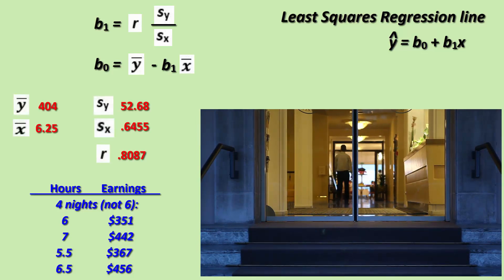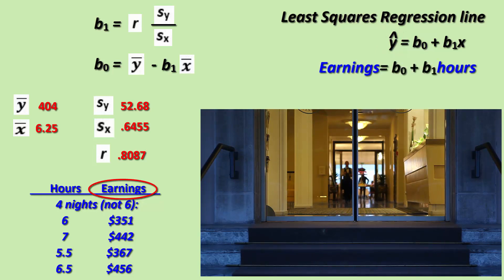Determine the least squares regression line for predicting earnings from hours worked. Keep in mind that the variable to be predicted is always the response variable Y. She wants to predict earnings, thus earnings per shift is Y, which is dependent on X, the number of hours worked.